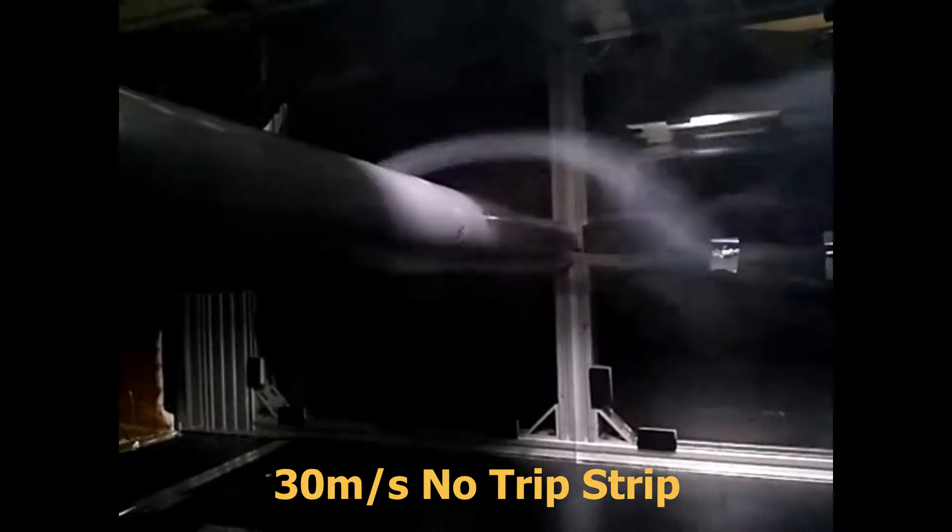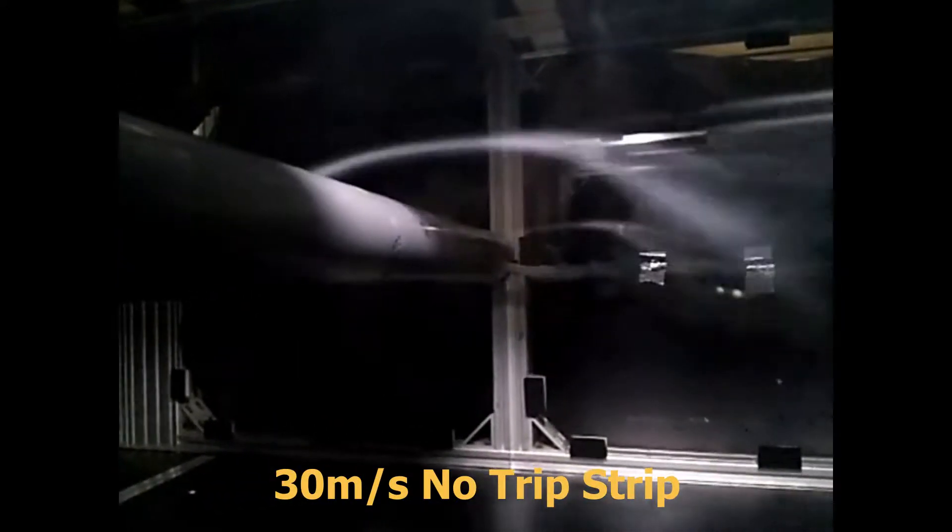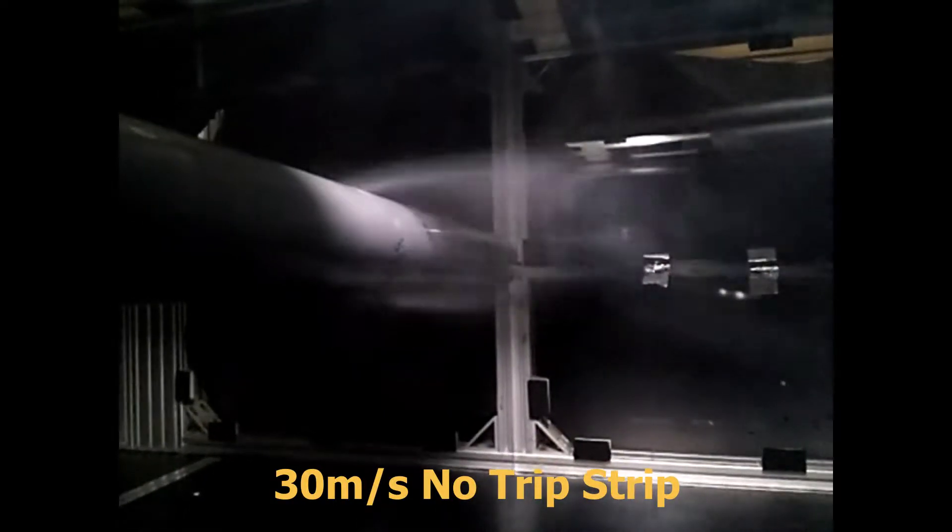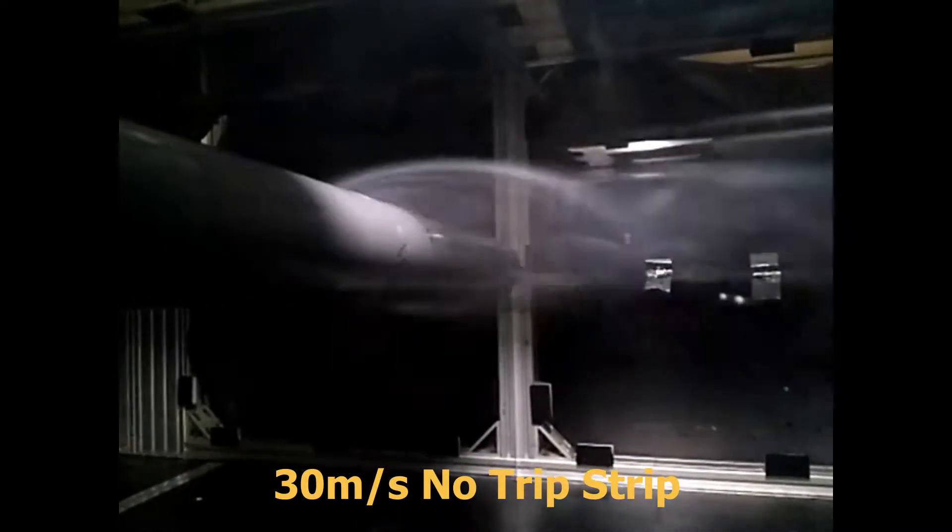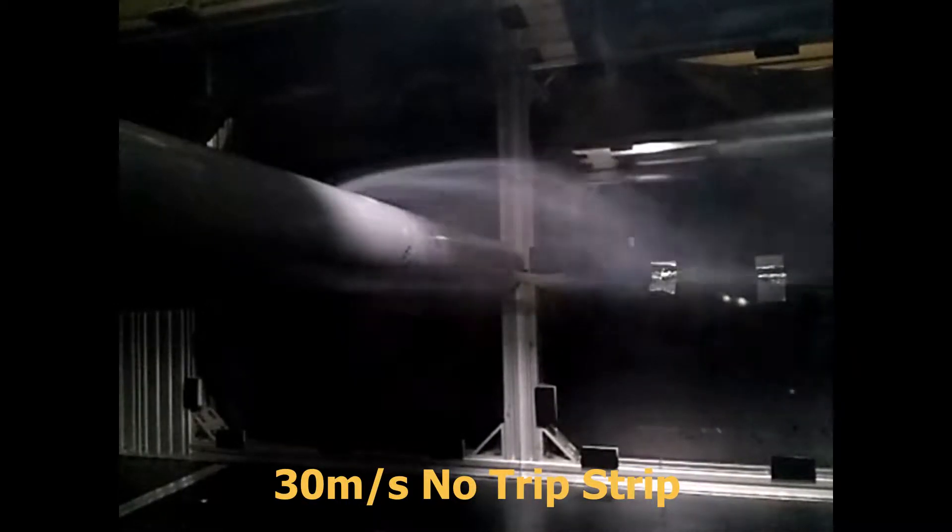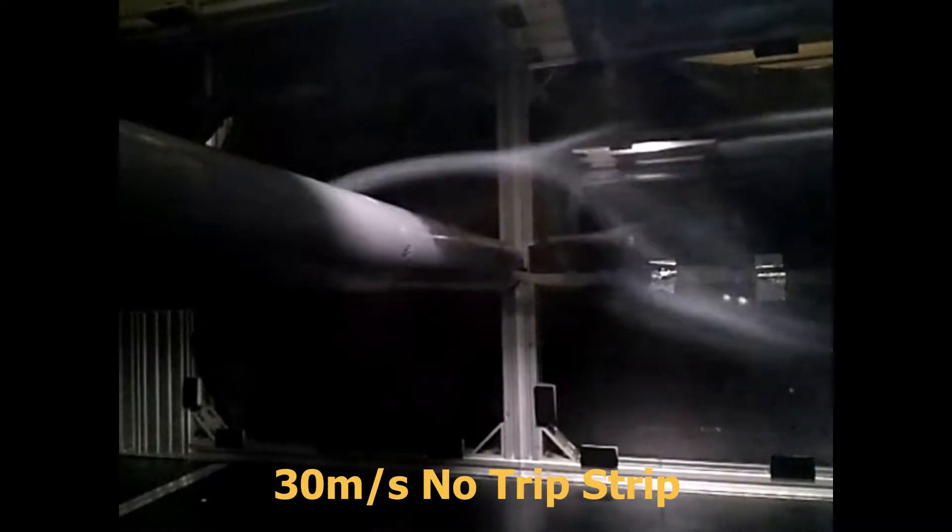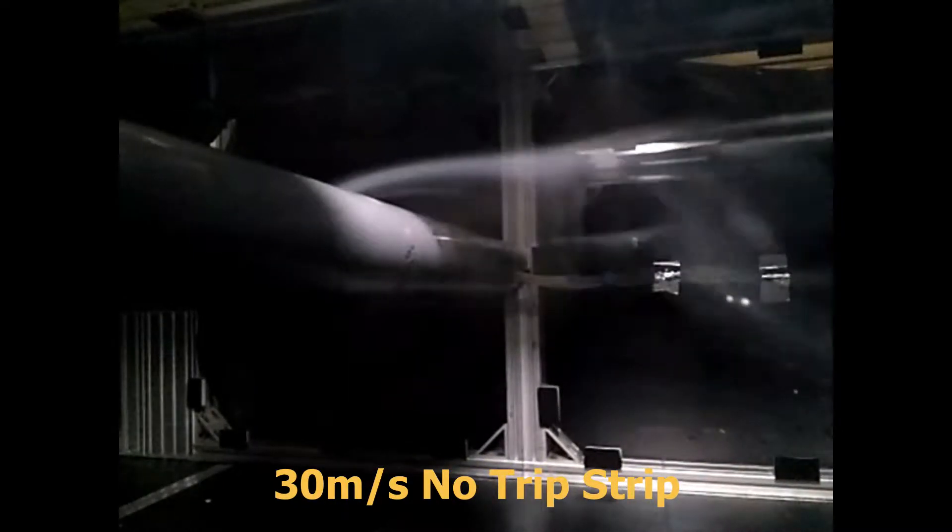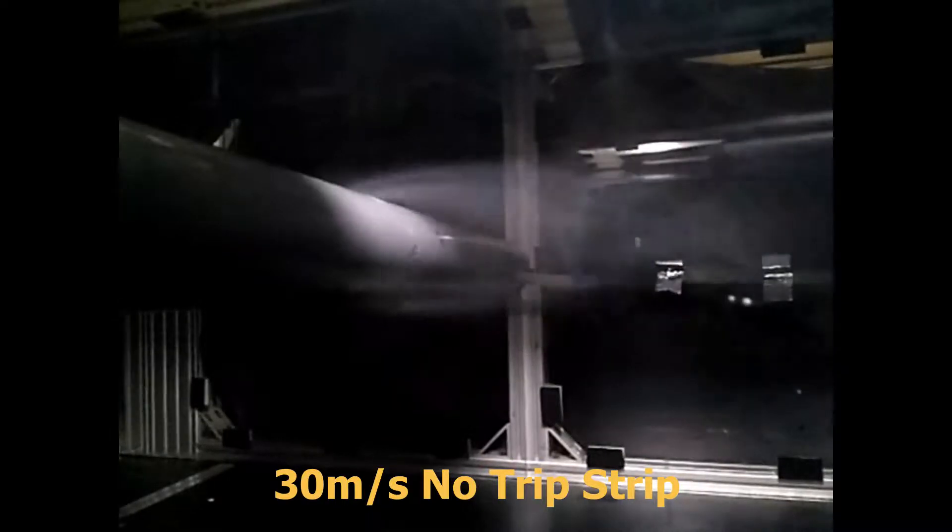Our objectives for this lab were to visualize and inspect the airflow around a cylinder at different Reynolds numbers, or in this case different velocities. We tested at 5, 15, and 30 meters per second. We also want to determine the pressure drag coefficient around the cylinder, and evaluate the effects of Reynolds number and surface roughness by utilizing a trip strip for the flow on the cylinder, as well as contemplating sources of error and uncertainty.